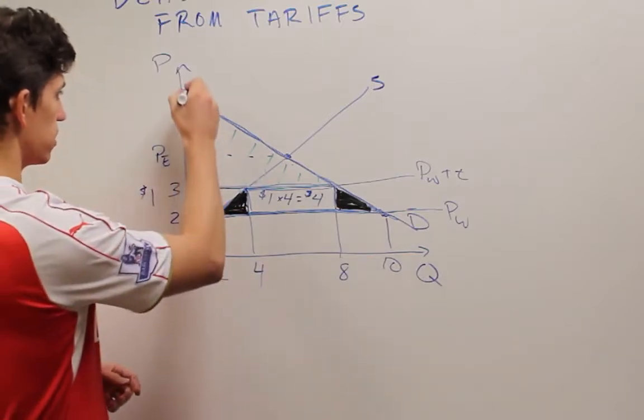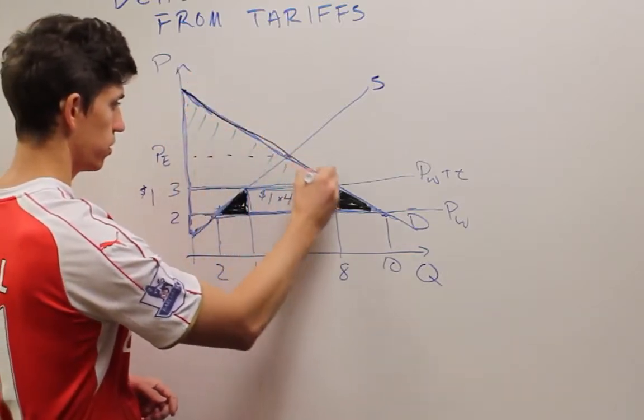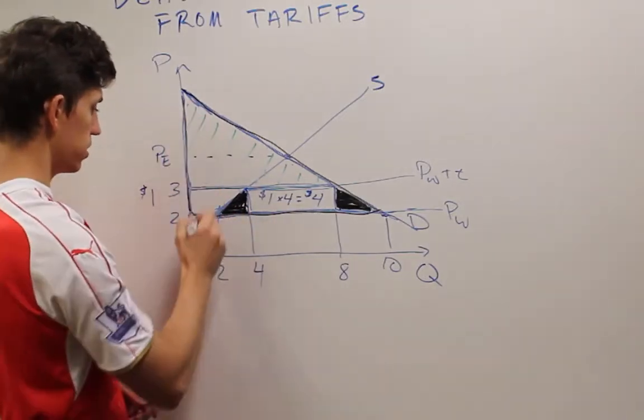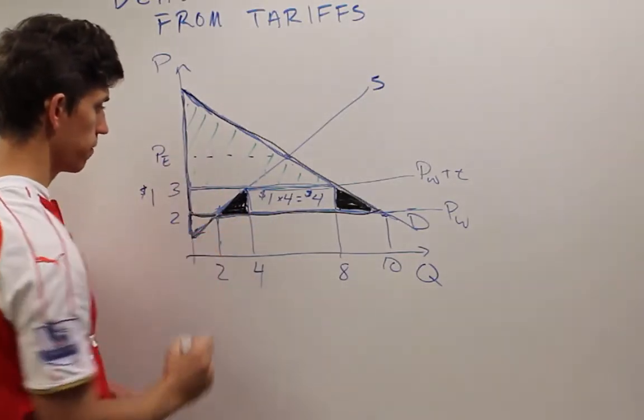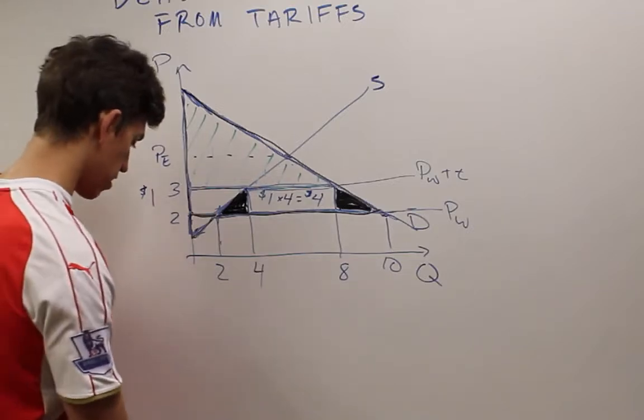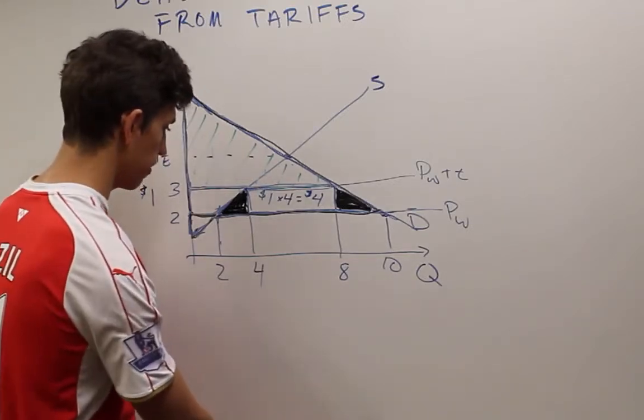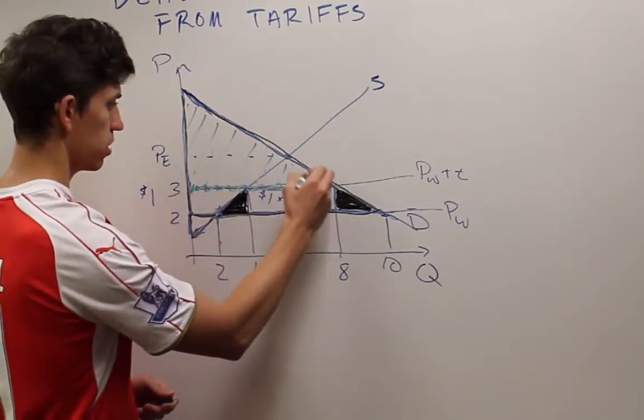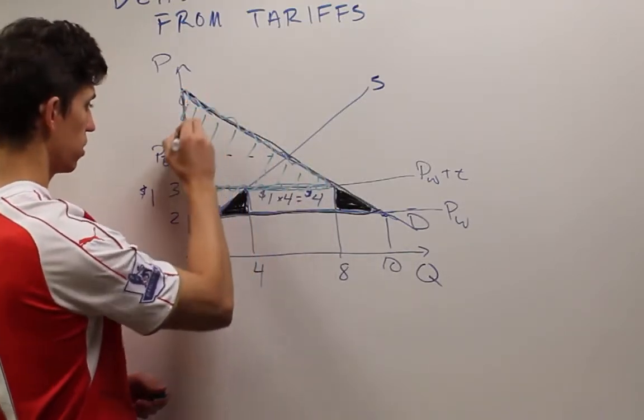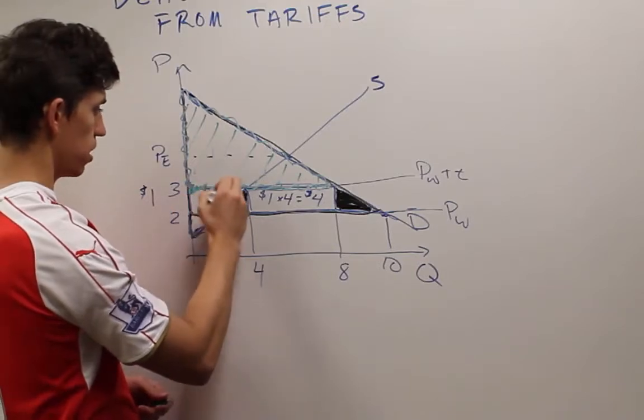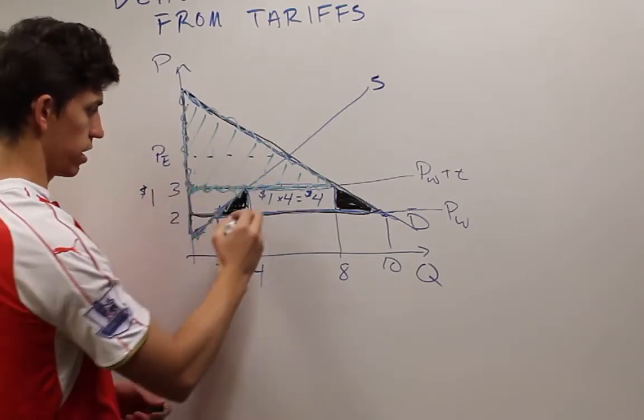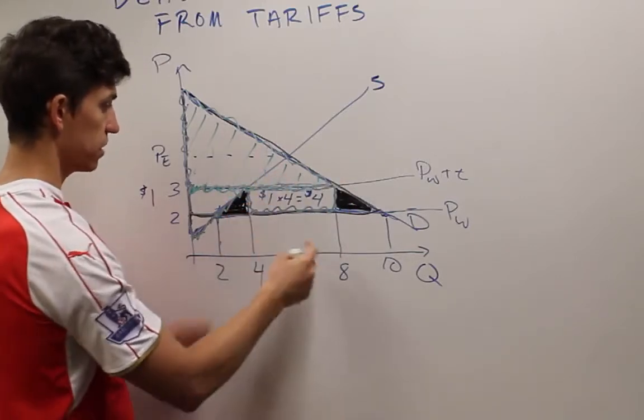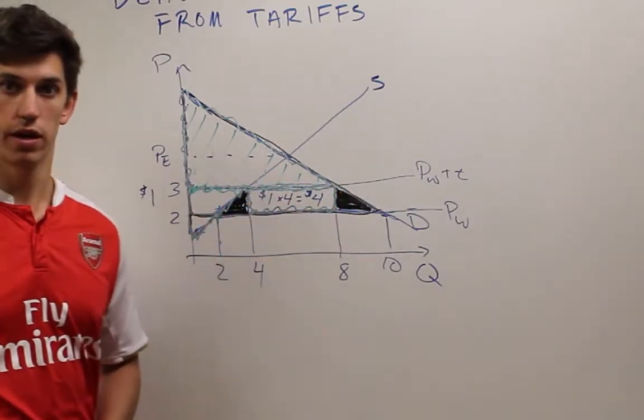Previously we had this entire area, this was consumer surplus and this was producer surplus. And now we only have, after the tariff, the total amount of surplus in the economy is only this box here for consumers, this box here for producers, and this box here for tariff revenue. We've effectively just lost these two little areas of the graph.